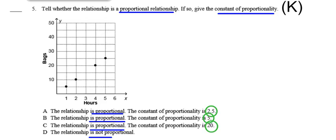Question 5. Tell whether the relationship is a proportional relationship, and if so, give the constant of proportionality K. A says the relationship is proportional and the constant of proportionality is 2.5. B says the relationship is proportional and K is 5. C says the relationship is proportional and K is 20. D says the relationship is not proportional.